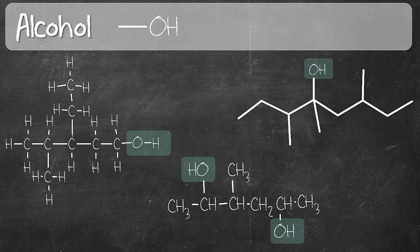The first structure, the one on the left, is actually an expanded formula. The structure in the center is a condensed formula and the structure on the right hand side is a bond line formula. You can get more info on these types of structural formulas in part 1 of this series.